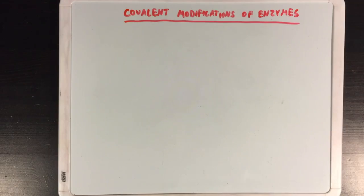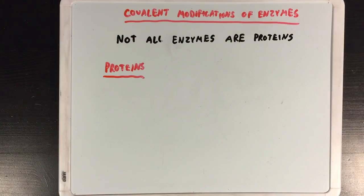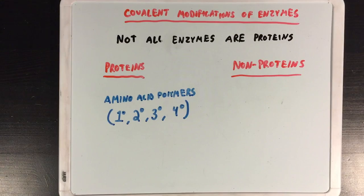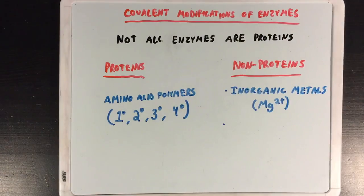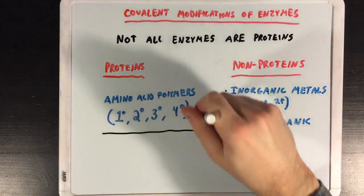Before we talk about covalently modified enzymes, I want to remind you that not all enzymes are proteins. When we think of enzymes, we often think of proteins, which are amino acid polymers with primary, secondary, tertiary, and quaternary structures. But there are also many different kinds of enzymes that aren't proteins. Inorganic metals, like magnesium, or small organic molecules, like flavin, can also act as enzymes. But for the purposes of this discussion, we're going to focus on the proteins.